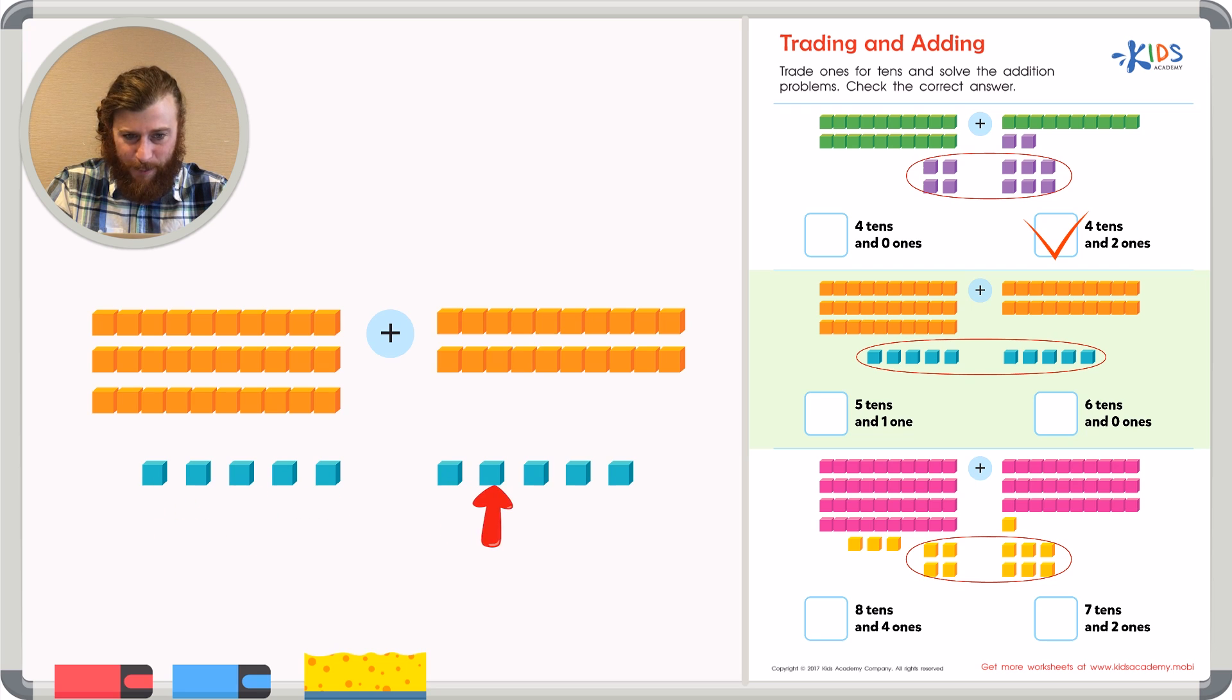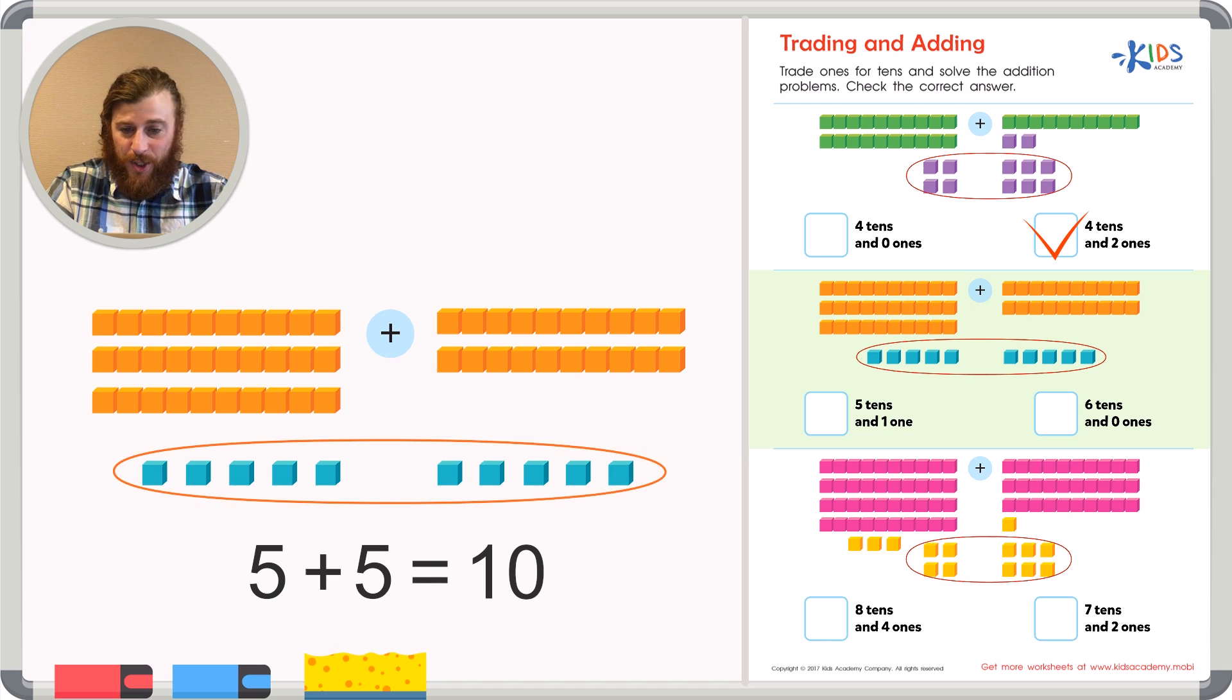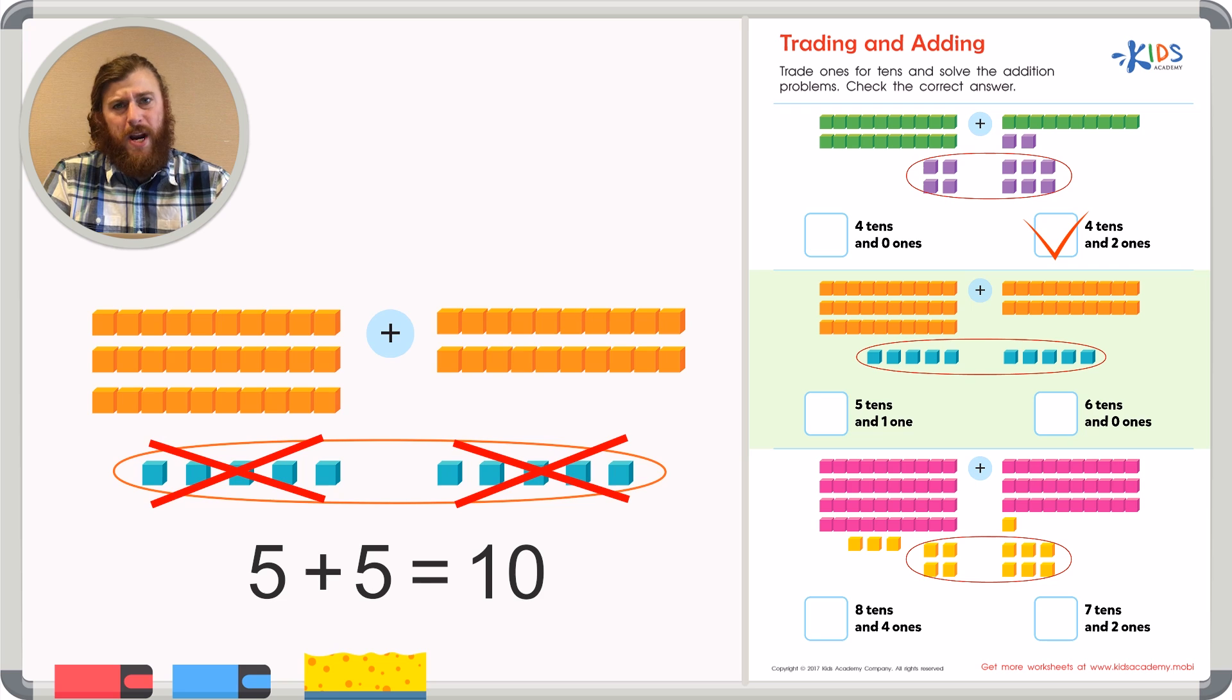Five plus five plus five equals ten. So I could cross out or trade these ten cubes for one long. Put my one long right here. Now I can just count the longs or the tens and see how many tens there are in total: one, two, three, four, five, six. There are six tens and we're left with zero ones, making the correct answer six tens and zero ones.